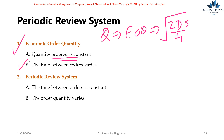In a nutshell, if EOQ is, let's say, 100 units, I can place an order after two days, after five days, after seven days, after two weeks — it entirely depends on what the demand is for a given period.